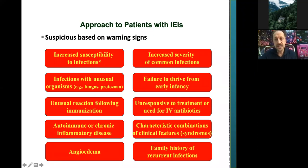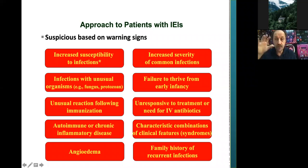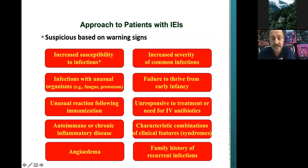The sixth warning sign is being unresponsive to treatment requiring intravenous antibiotics, not regular antibiotics. The seventh is autoimmune or autoinflammatory diseases. A common example is FMF, familial Mediterranean fever — a prototype with recurrent fever, recurrent abdominal pain, and skin rashes. There are more than 30 different diseases in this category, like PFAPA and TRAPS. There is also early-onset IBD — Crohn's disease or ulcerative colitis in infancy — due to IL-10 or IL-10 receptor deficiency, requiring bone marrow transplantation, making a definitive diagnosis essential.